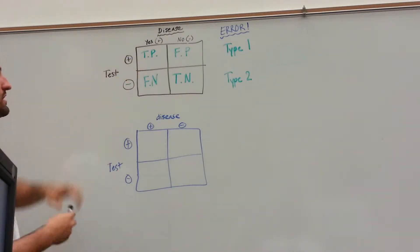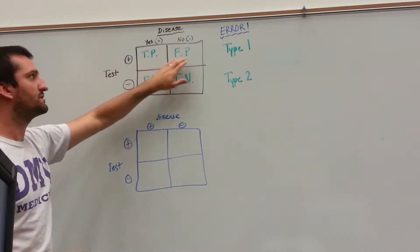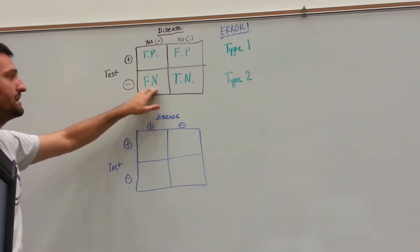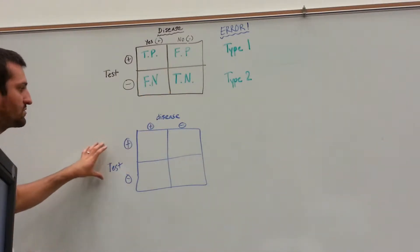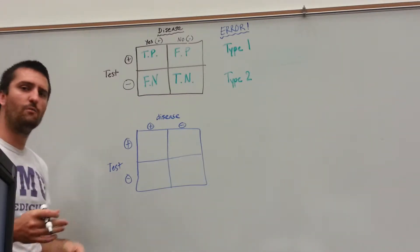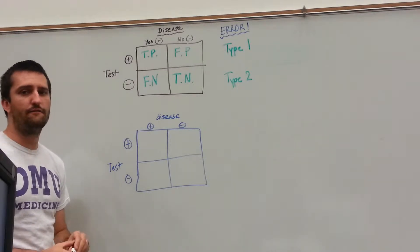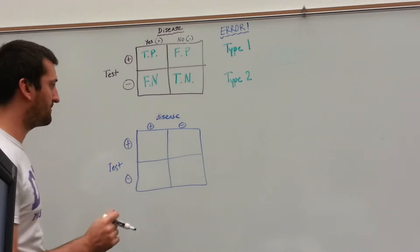Here's a completed square, and it's going to show your true positive, so TP stands for true positives, false positives, false negatives, and true negatives. Well, what does all this mean? I have an empty square down here, and we'll go over this step-by-step, just to hopefully explain it in a different fashion than maybe what you've heard before.